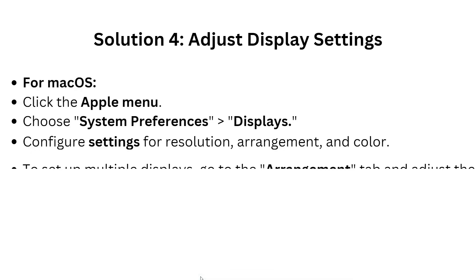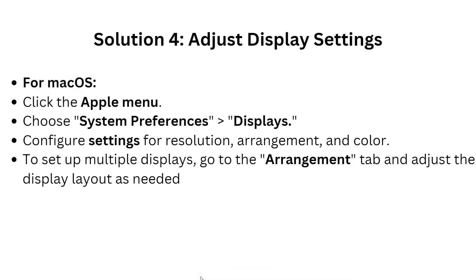For Mac users, click on the Apple menu, then choose System Preferences and then Displays. Configure settings for resolution and color. To set up multiple displays, go to the Arrangement tab and adjust the display layout as needed.